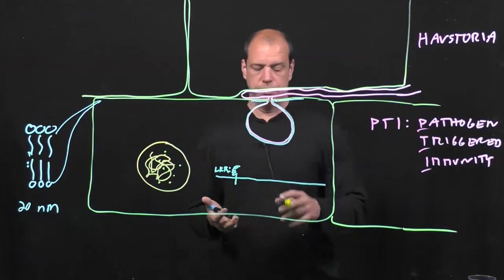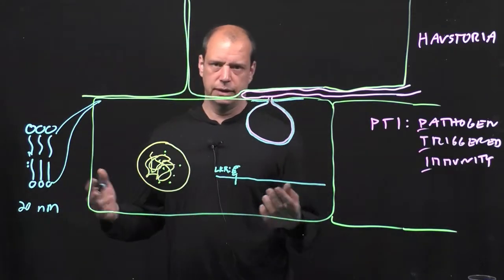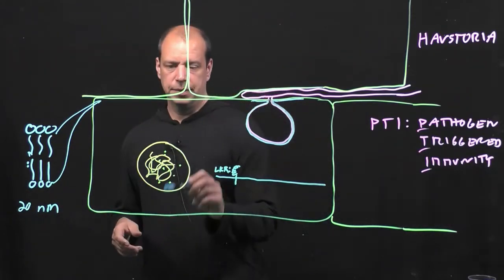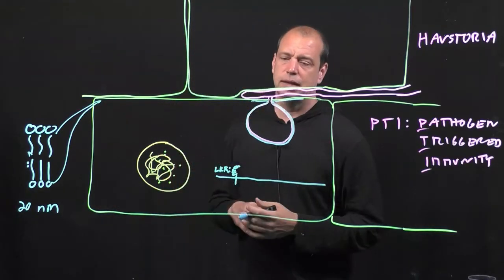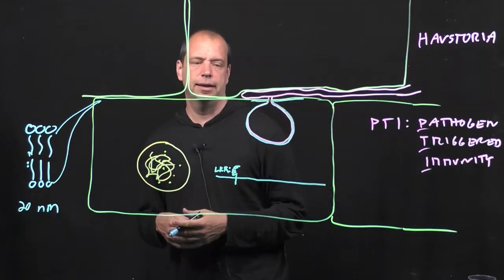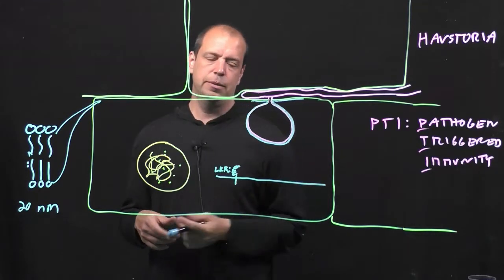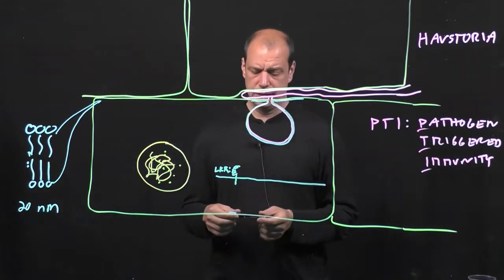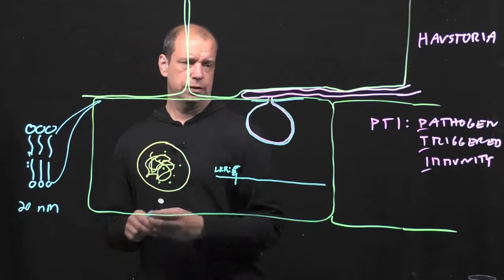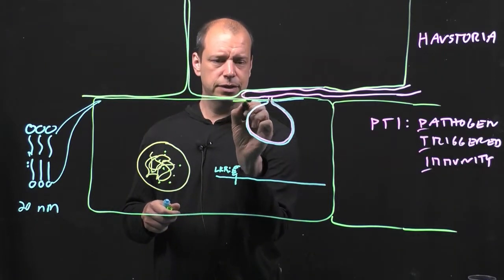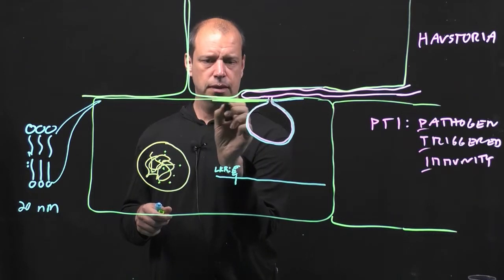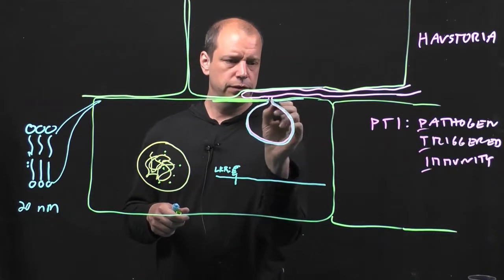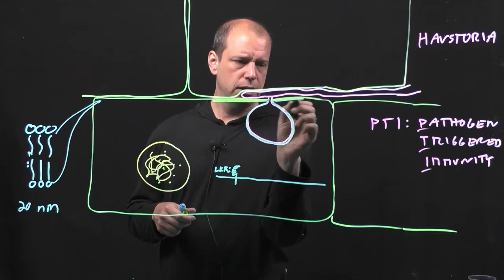There's transcriptional responses, a large number of them. There's a core set of about 1,100 genes that are upregulated in response to attack by any pathogen. And the result frequently is a thickening of the cell wall via callose deposition, which makes it more difficult for the fungus to enter.